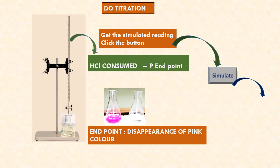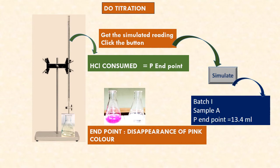Let us simulate and get values for five different sample waters. Batch one students, you have been given sample A. Sample A phenolphthalein endpoint is 13.4 ml — please make a note, batch one students.